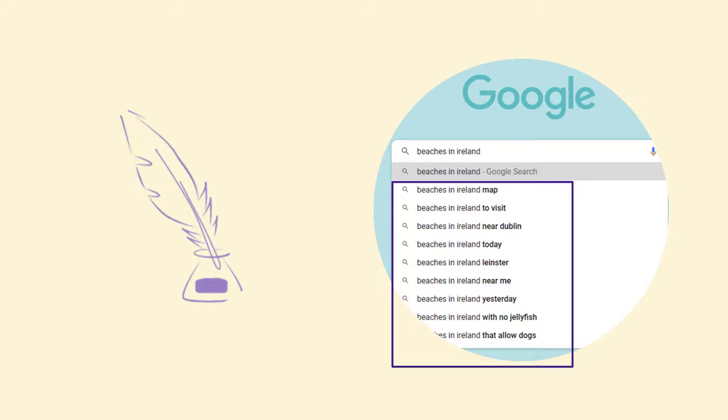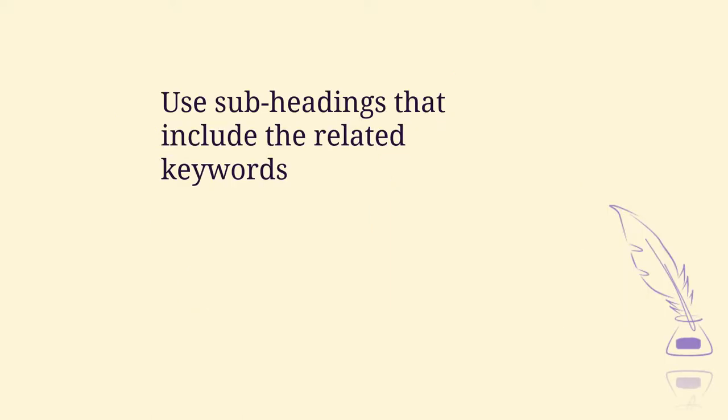So the most popular search terms related to 'beaches in Ireland' are terms like 'beaches in Ireland map', 'beaches in Ireland near Dublin', etc. You can get related keywords just by going to Google, typing in a search term, and letting Google show you the other search terms that are most related.